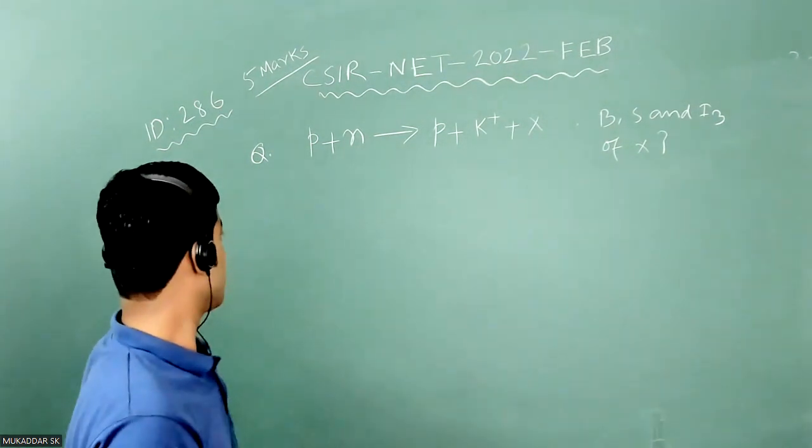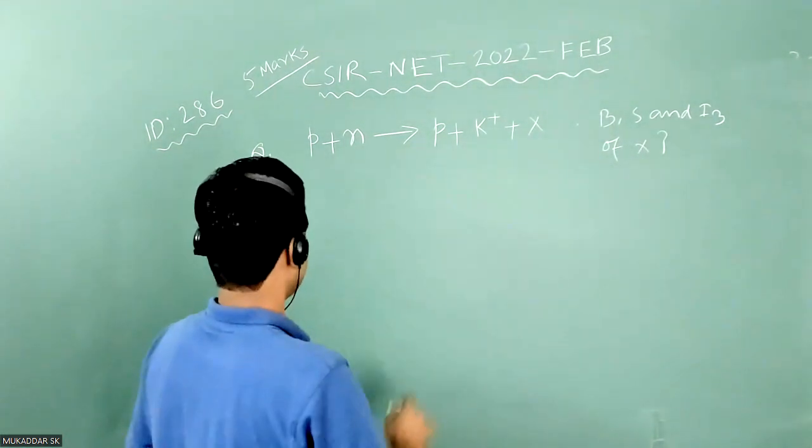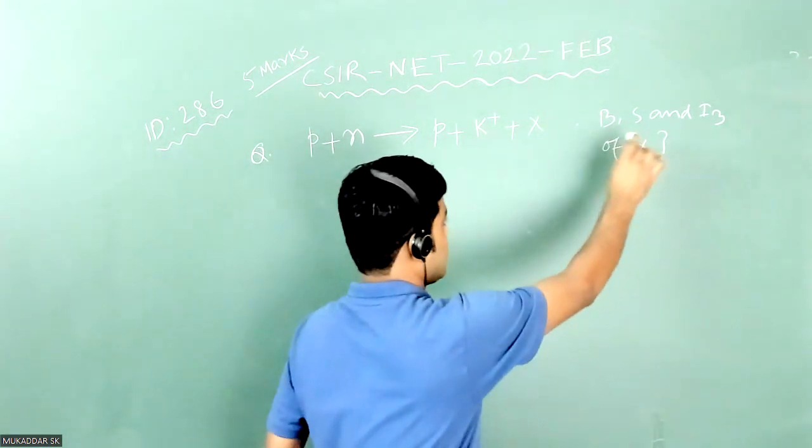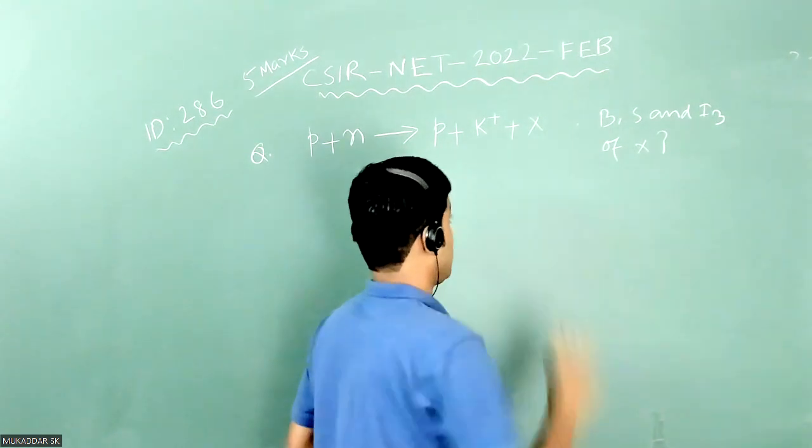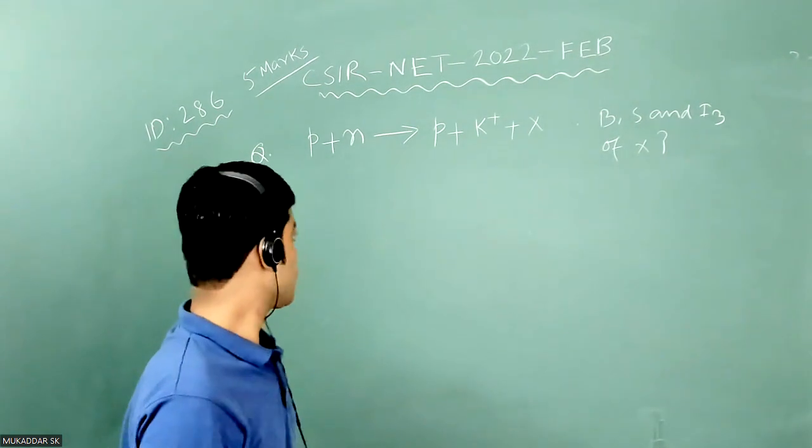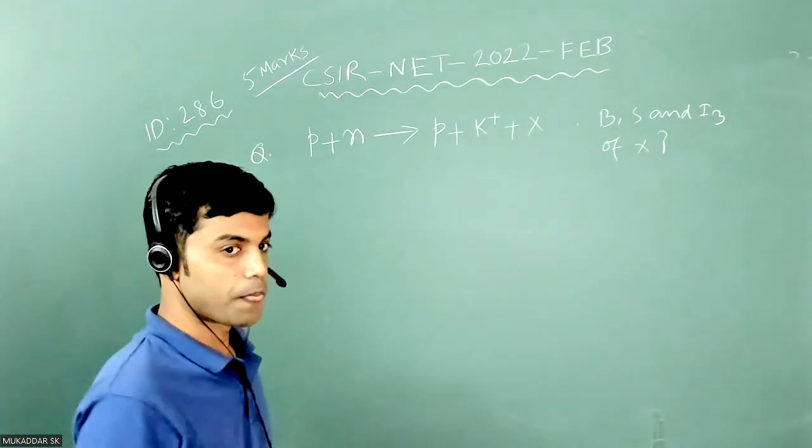And obviously this question is from particle physics. In that question what they have given, they are given that if this interaction is mediated by strong interaction, then what are the baryon, strangeness and i3 component of x particle. As you know, all three quantum numbers are conserved in strong interaction, so we will check one by one.